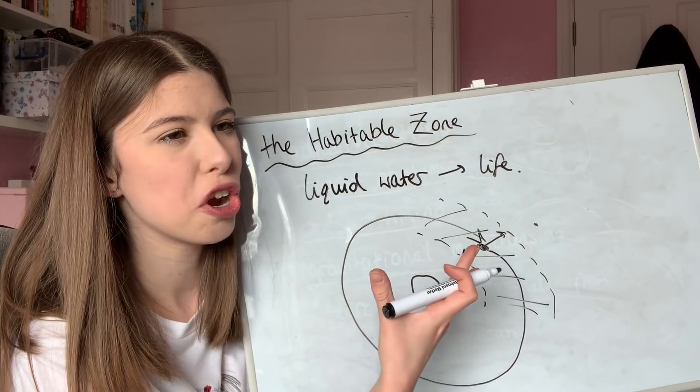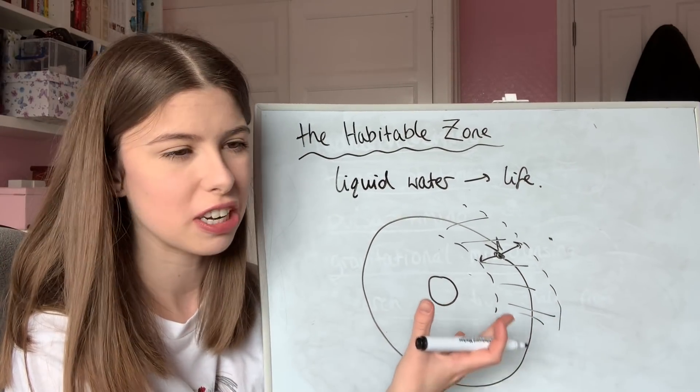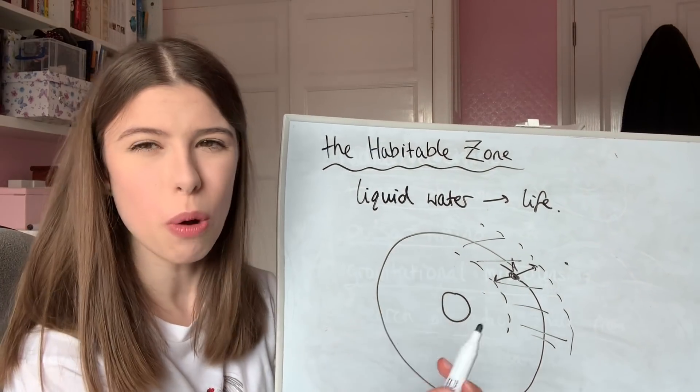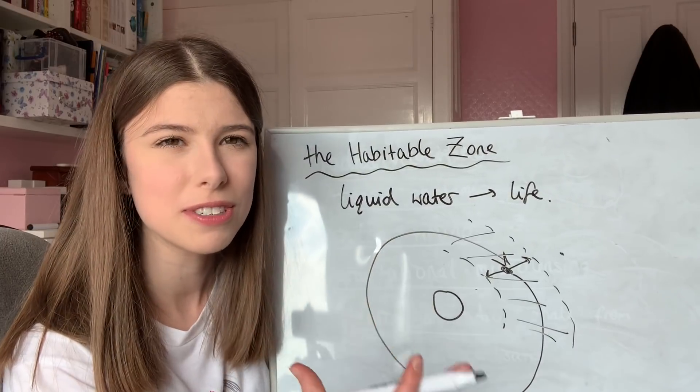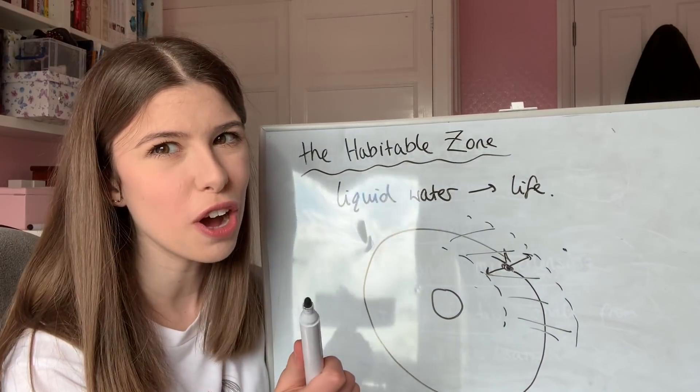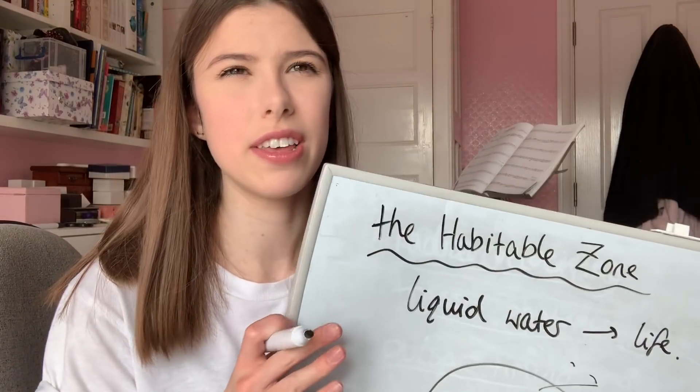The habitable zone is often called the Goldilocks zone as well, because in the tale of Goldilocks and the Three Bears, she complains about her porridge being too hot or too cold, but eventually she gets some porridge that is just right. We estimate that about 20% of stars have an Earth-like planet in the habitable zone. This gives lots of potential for extraterrestrial life, so very exciting.